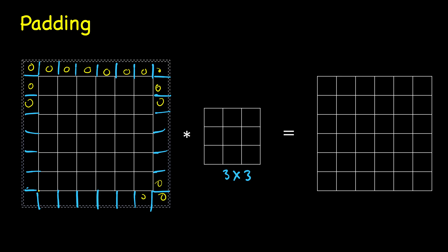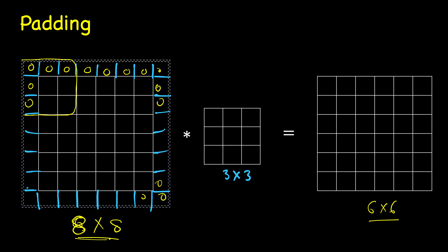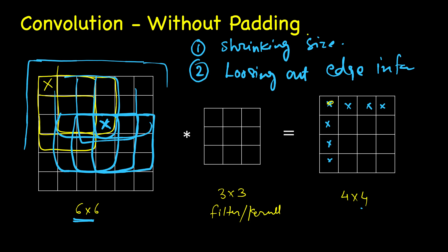The original width was 6; adding one pixel on the left and one on the right increases the width by 2, making it 8. Similarly, the height becomes 8, so now the padded image is 8x8. If you align the filter and shift it, you now get 6 positions, so you get a 6x6 output - the same size as the original input. So this problem of shrinking size is solved.